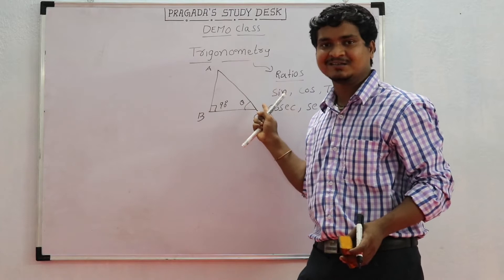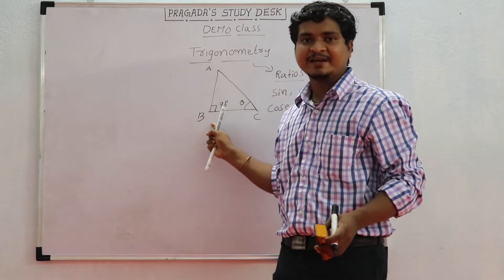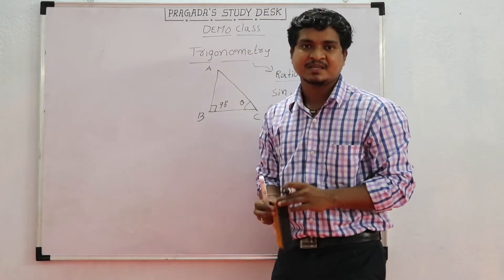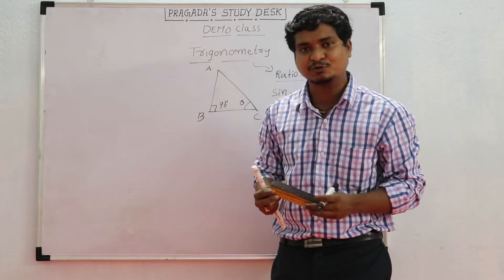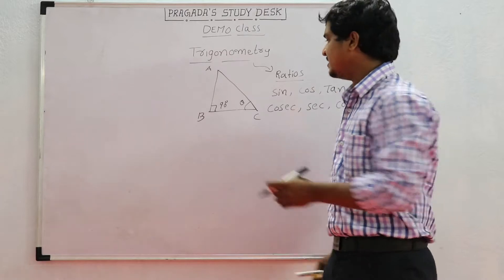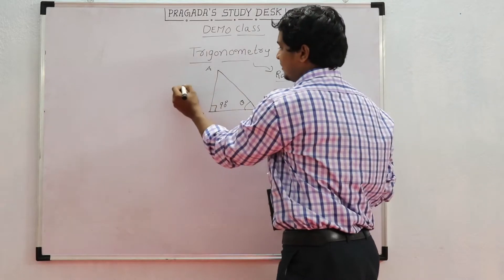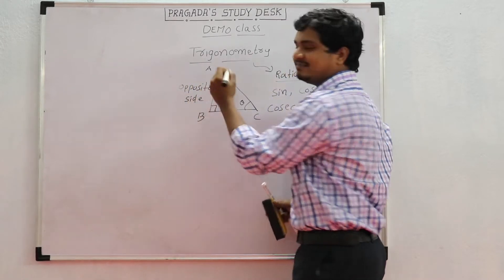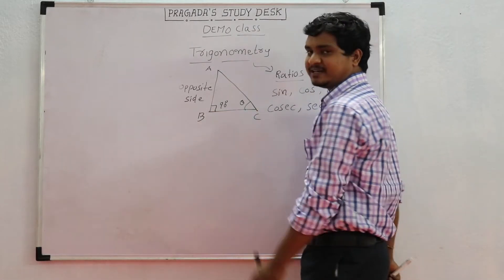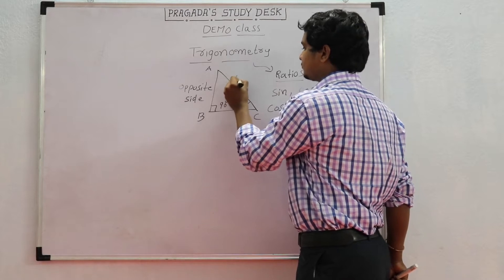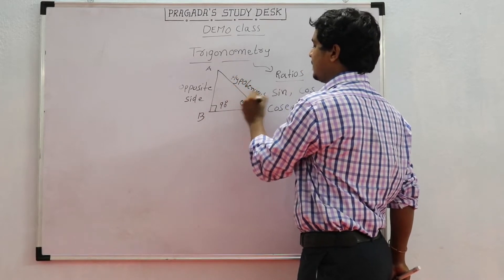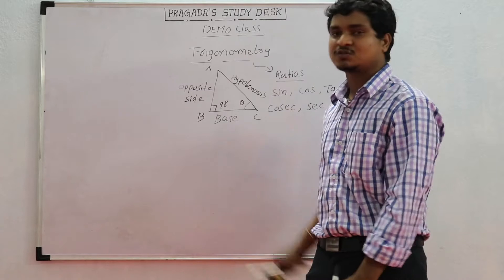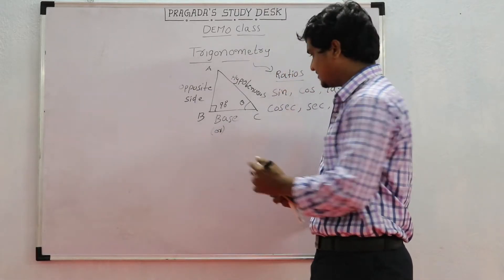If one of the angles is 90 degrees, that will be a right angle triangle. If the angle is less than 90, that is an acute angle. If the angle is between 90 and 180, that is an obtuse angle. In this right angle triangle, the side opposite to angle theta is called the opposite side. The side opposite to 90 degrees is called the hypotenuse. The side along with theta is called the base or adjacent side.